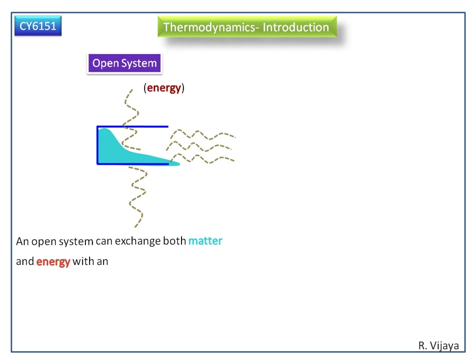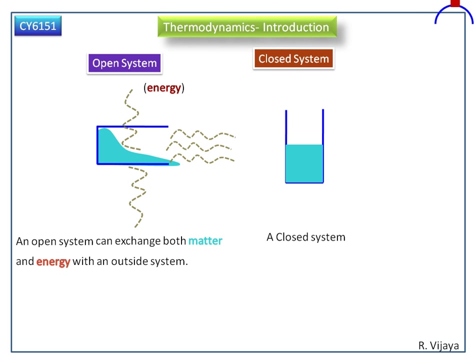matter and energy with an outside system. Next we see closed system. This is the flask containing liquid. This liquid may be hot or cold. Now this flask is covered with the lid. Here we can see how the energy